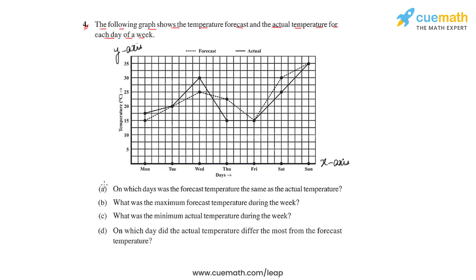Question A asks us to find the days when the forecast temperature and the actual temperature are both the same. To answer this, we need to find the points where the two graphs meet. The first instance is here, this is the second, and this is the third — these are the three points where both temperatures are equal.